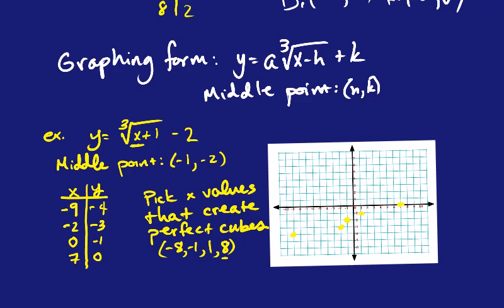So as long as you use these perfect cubes, you should walk away with a nice-looking graph. Just remember the middle point is at h, k. And that the perfect cubes that you want to create underneath the radical are negative 8, negative 1, 1, and 8. And it should be able to give you a graph that looks like this every single time. I'm not great at drawing them. So that looks pretty awful. So hopefully in class you'll see a more beautiful picture. I'll get better at drawing them. But have a wonderful day. And talk to you later.